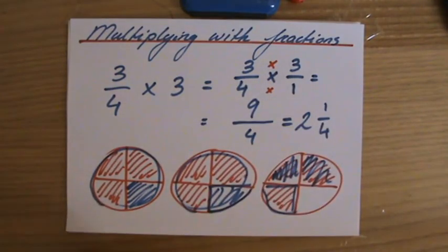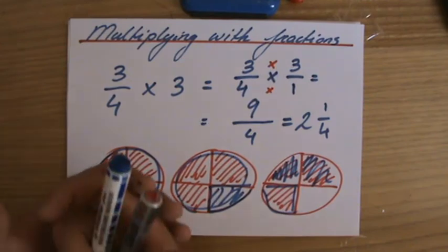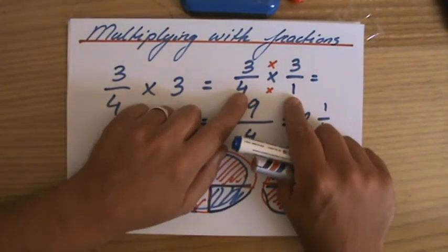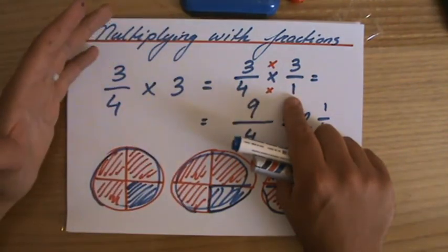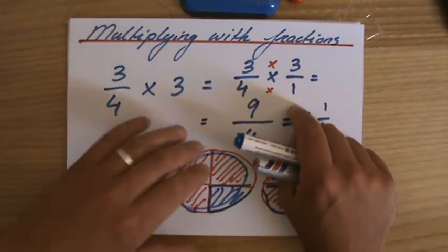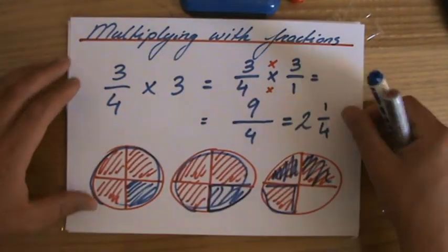So you do not have to manipulate them, you do not have to find equivalent fractions and make sure that those denominators are the same, like you have to do when you're adding or subtracting. When you are multiplying, and also dividing, I will show you later, you do not have to manipulate those fractions.